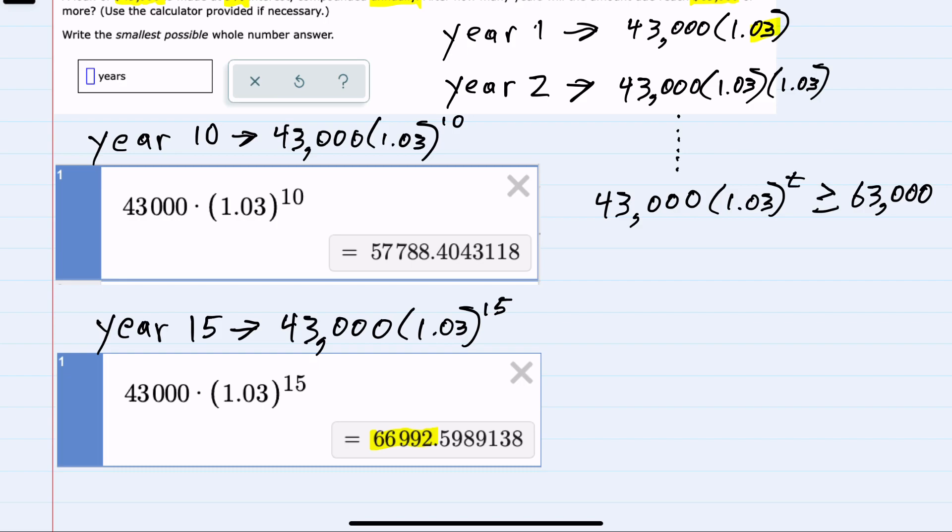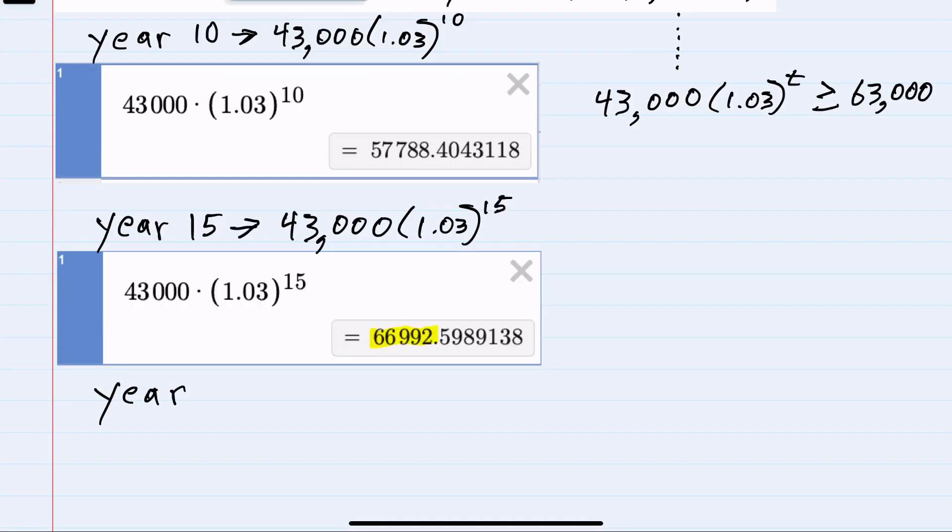So somewhere between year 10 and year 15, we have exceeded $63,000 due. So I'll try a value somewhere in between. I'll try 13 years. And that expression is $43,000 times 1.03 to the 13th.